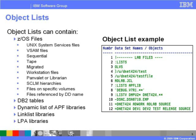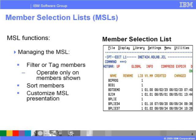In summary, an object list can help you organize your work. A member selection list, or MSL, is a list of members of PDS or PDSE libraries. It looks similar to the ISPF list of members, but with ISPF Productivity Tool you can manage the member list with commands such as filter or tag, which identify the members you want to process. You can also sort the members in the list. The MSL is shown on the right side of the slide, and its presentation on the screen can also be customized.